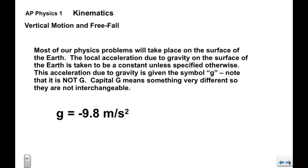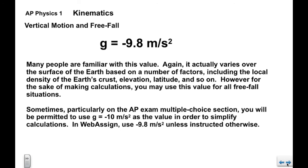Now most of our problems that we solve are going to take place on the surface of the earth. The local acceleration due to gravity is taken to be a constant unless otherwise specified. This acceleration due to gravity is given the symbol lowercase g. It's not a capital G. Capital G has a completely different meaning. We will get to it a little later on, so they are not interchangeable at any time. So the lowercase g acceleration due to gravity is 9.8 meters per second squared.